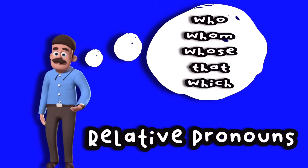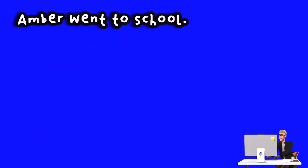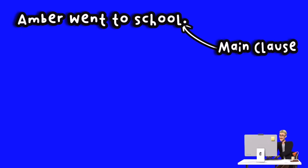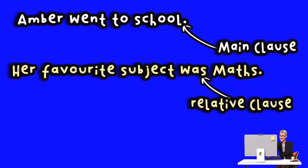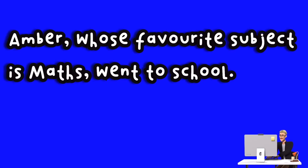Here is an example of how you can use a relative clause in a sentence. 'Amber went to school' is the main clause. 'Her favorite subject was maths' is the relative clause, which is dependent on the main clause. Here is the complete sentence using the relative clause: 'Amber, whose favorite subject is maths, went to school.'